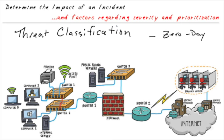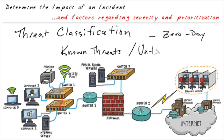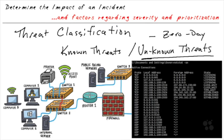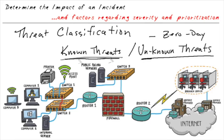In the case of threats, we have known threats that antivirus and intrusion detection systems can pick up on, and then we have unknown threats like a zero-day attack which has not yet been identified. The malware itself could be an example of an unknown threat. At the same time, if netstat shows a connection to a high-risk country notorious for advanced persistent threats, that connection could be an example of a known threat.